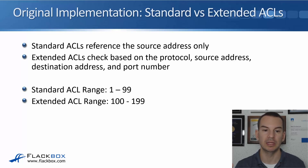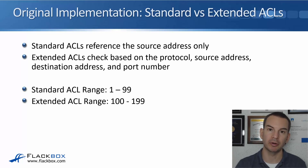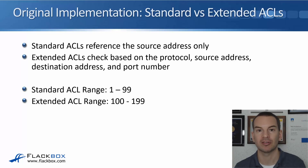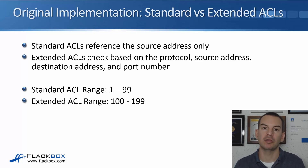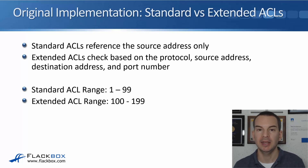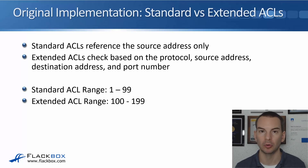The ranges are: numbered from 1 to 99 is always a standard ACL — you can't put information like the destination IP address in there. Numbered from 100 to 199 is always an extended ACL, which does allow you to put in the more granular information.